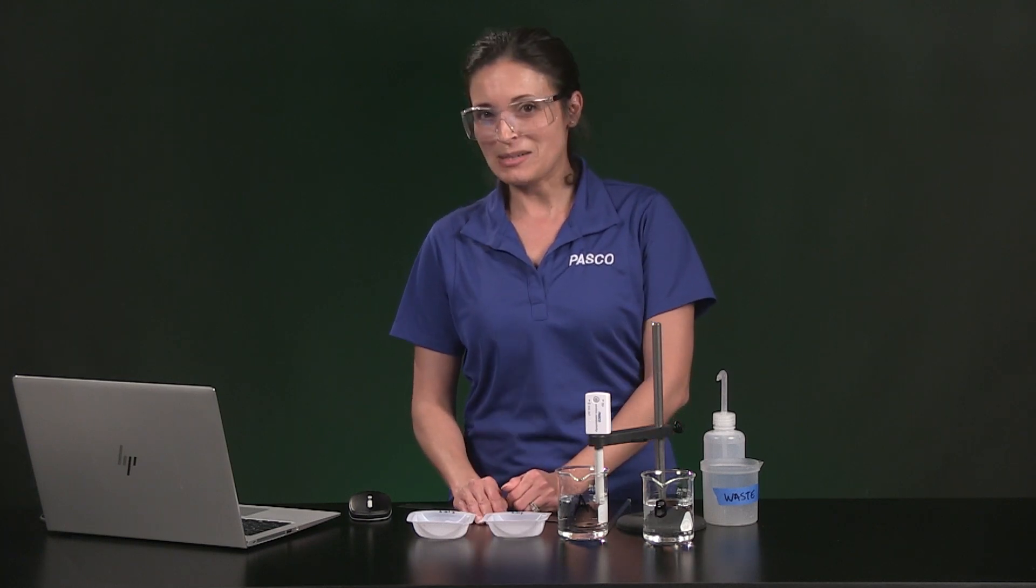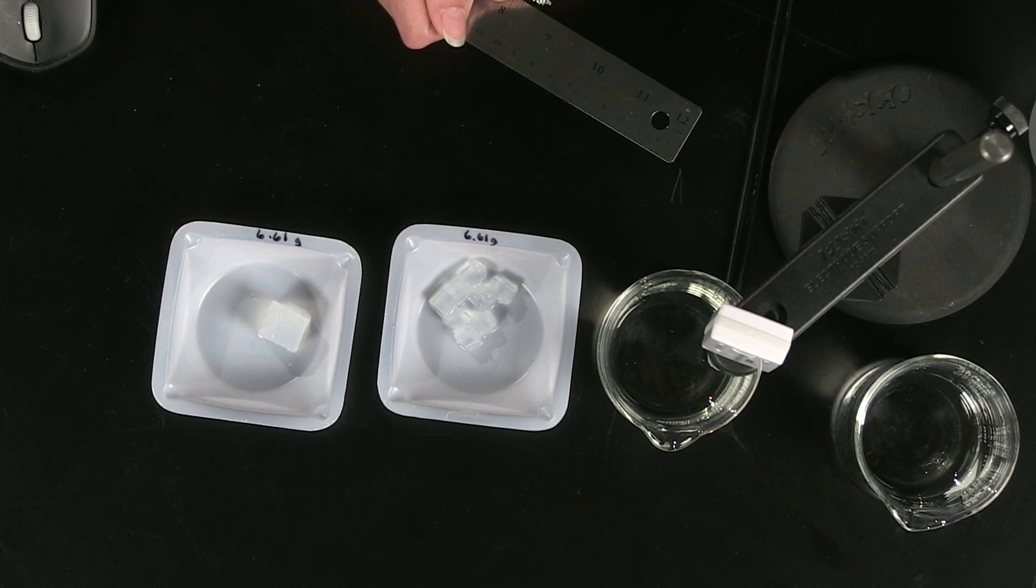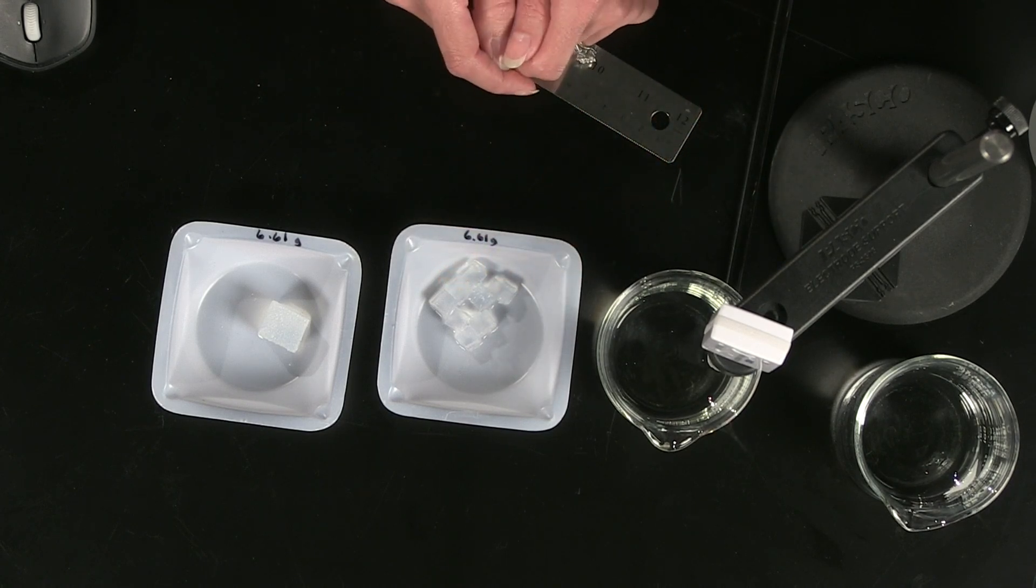You will need to record the following masses in Table 1. Sample A has a mass of 6.61 grams, and all of these pieces that make up Sample B together total 6.61 grams, so we are working with equal masses.